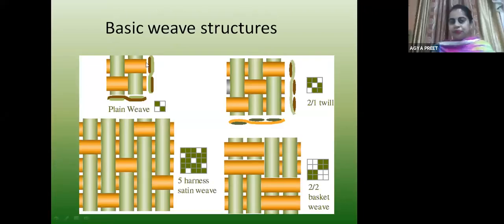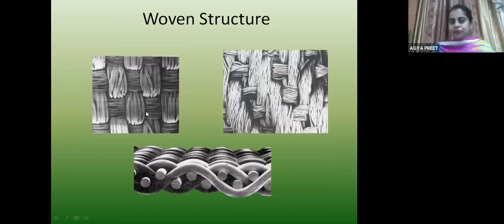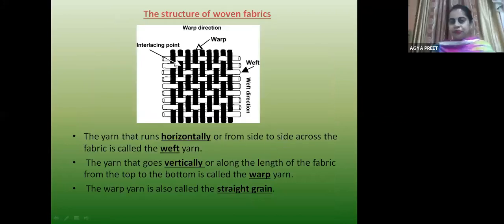This is the woven structure seen under the microscope showing plain weave structure. You can see the warp yarns going over and under. The yarn that runs horizontally from side to side is the weft yarn, and the yarn which runs perpendicular from top to bottom is called the warp. Where these two intersect, that point is called the interlacement point.